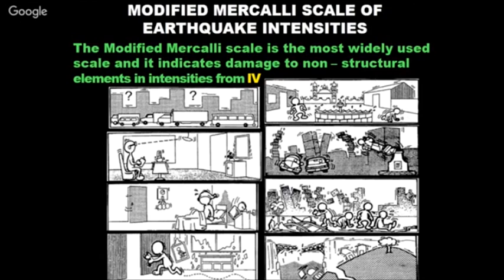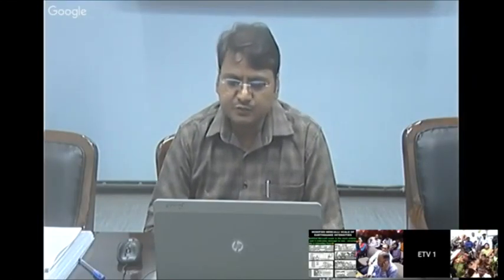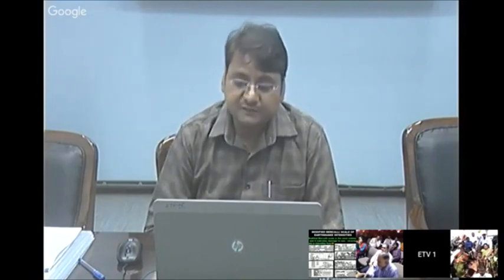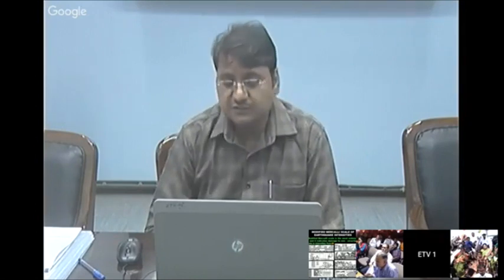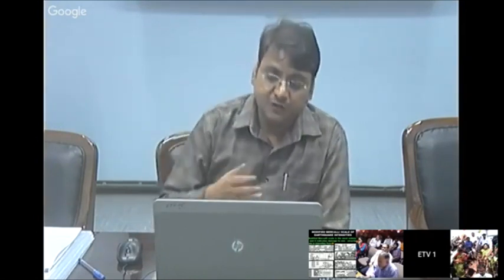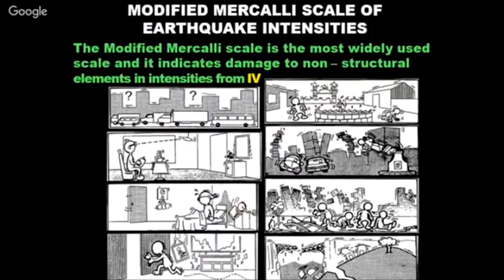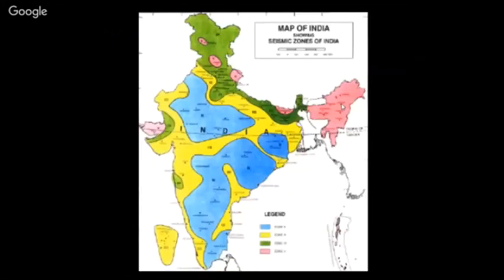On the Modified Mercalli scale: intensity I is barely felt; intensity II means objects and fans are visibly moving; intensity III wakes sleeping people; at higher intensities it becomes difficult to stand, non-engineered structures collapse, ground failure occurs, and even some engineered structures collapse. This scale is based on the level of damage at a particular place.